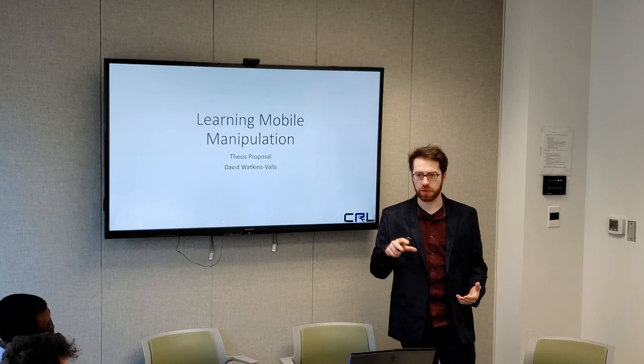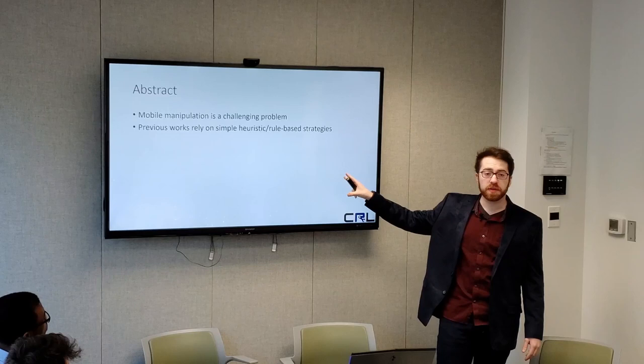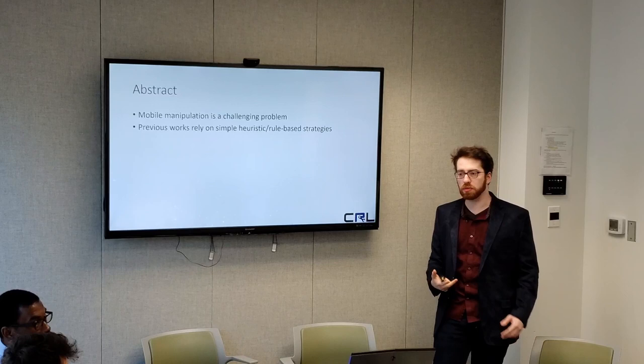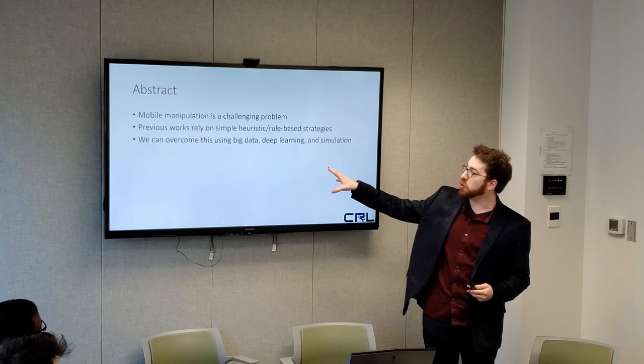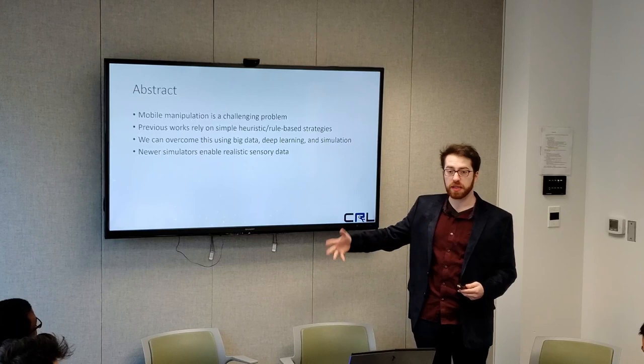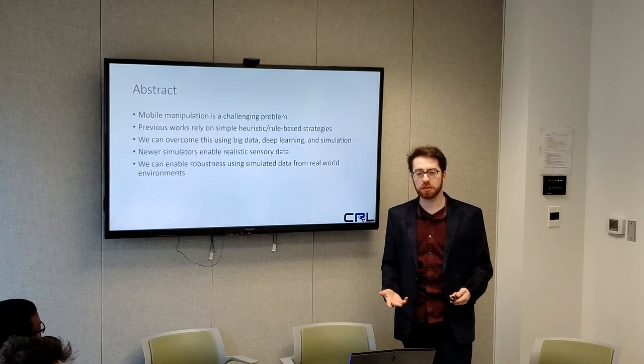I want to first off start by saying mobile manipulation is a hard problem. It is not solved yet. Many of the previous works rely on heuristic or rule-based strategies, not taking into account deep learning approaches that have come out recently, especially in terms of navigation and object recognition handling novel objects. We can use new advances in simulators to generate large amounts of data to train these neural networks where we weren't able before.